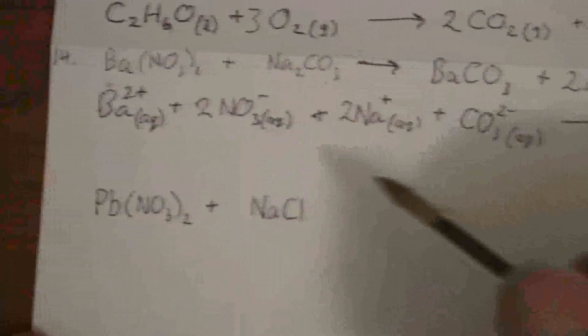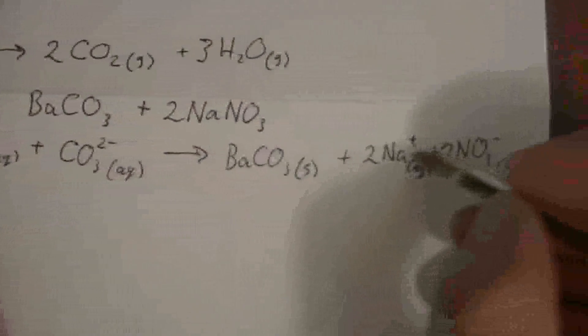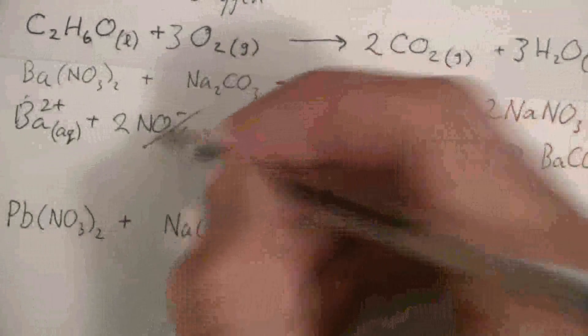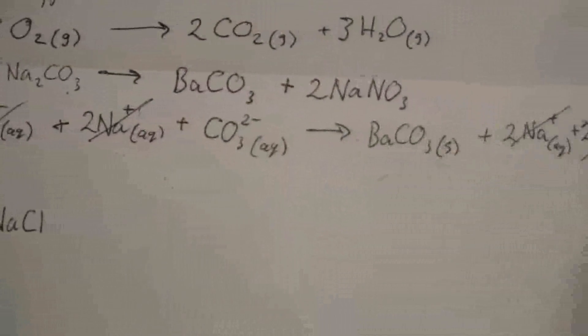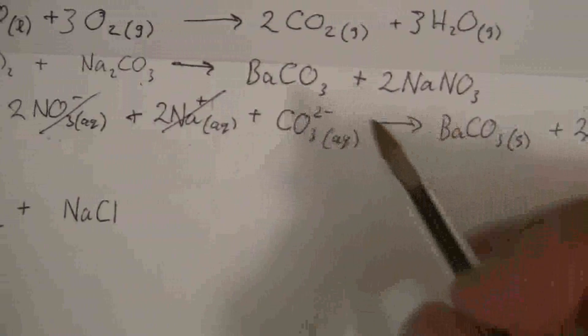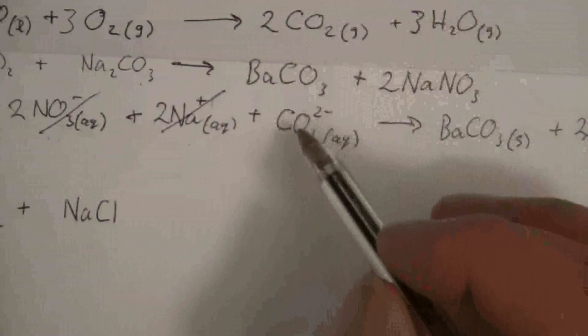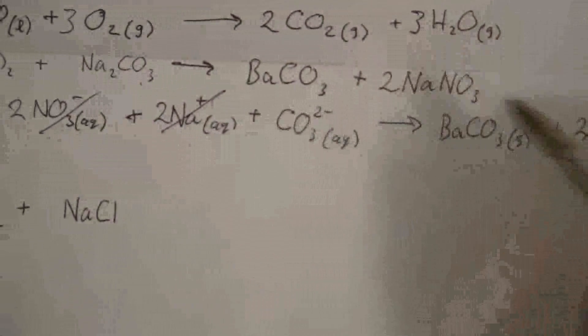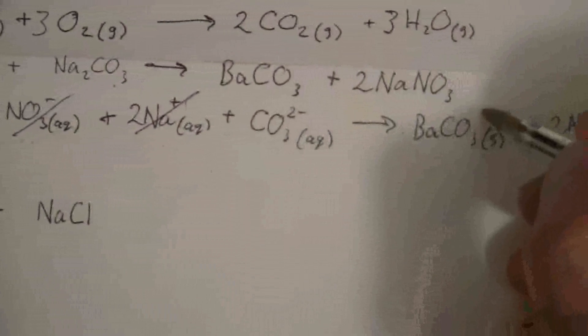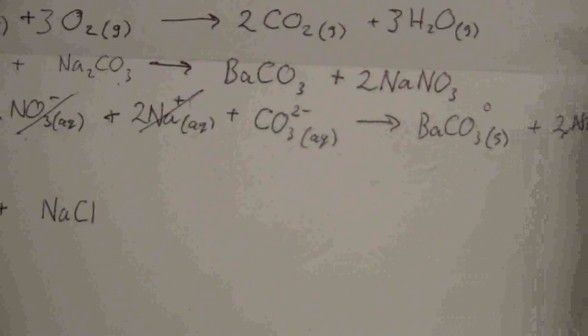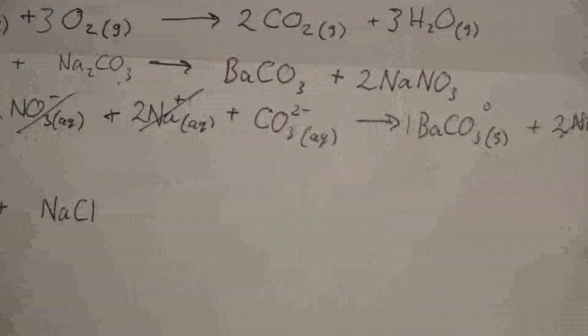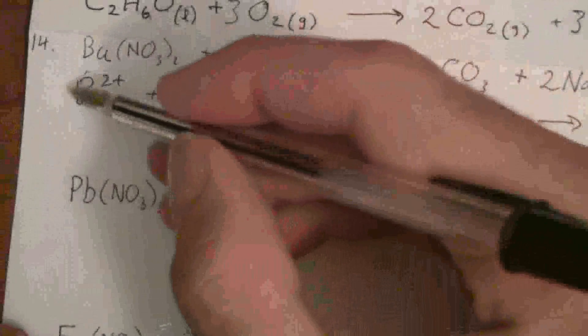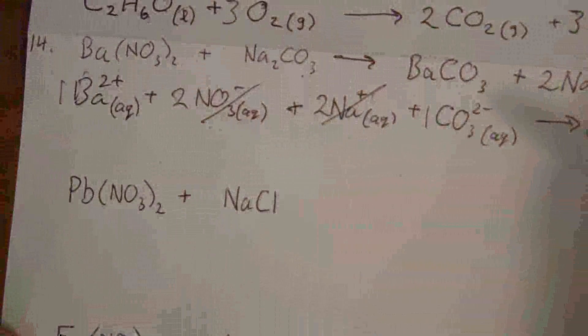To write the net ionic equation, you cancel out all the spectator ions — the sodium and nitrate ions — and what's left is what you put in, making sure to include your charges. For all of these you need to know your charges; look them up if necessary. For the solid compound, it has a zero charge. You would enter the net ionic equation into Chem21.